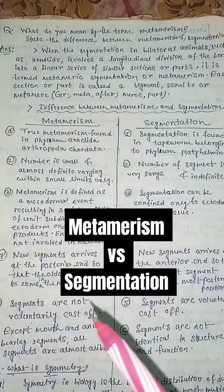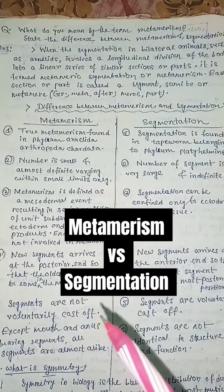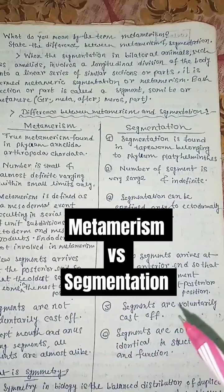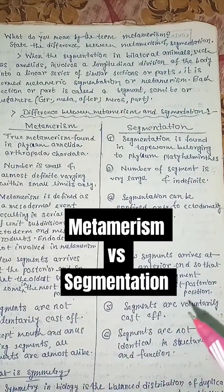In metamerism, segments are not voluntarily cast off, but in segmentation, segments are voluntarily cast off.